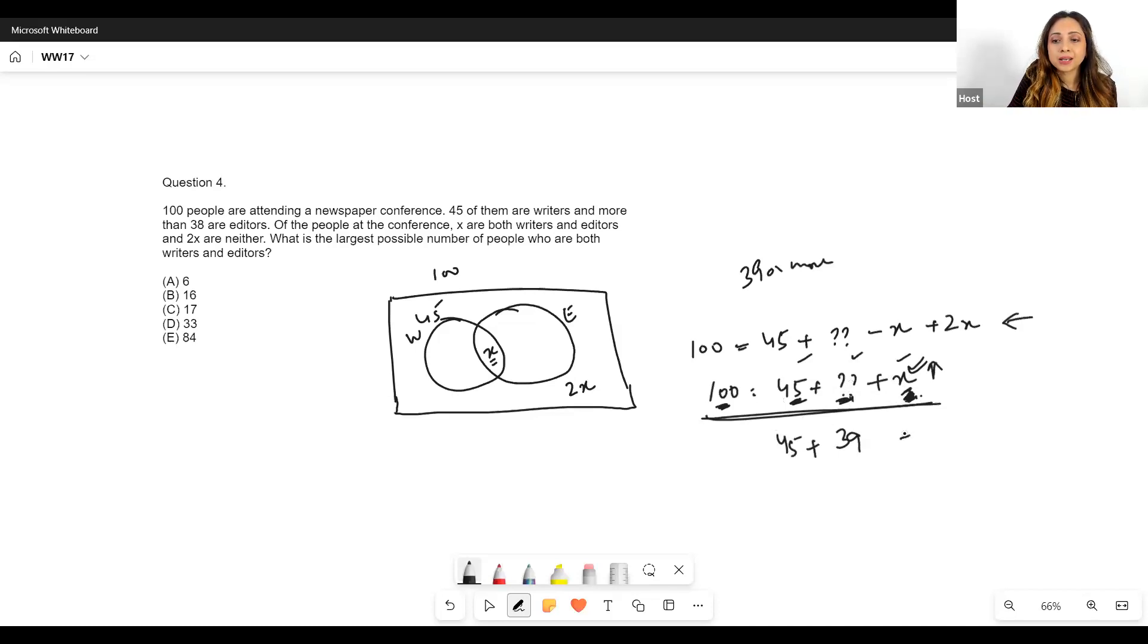So then I have 45 plus I have 39 plus x, that is what gives me 100. Then x is going to be equal to 16.